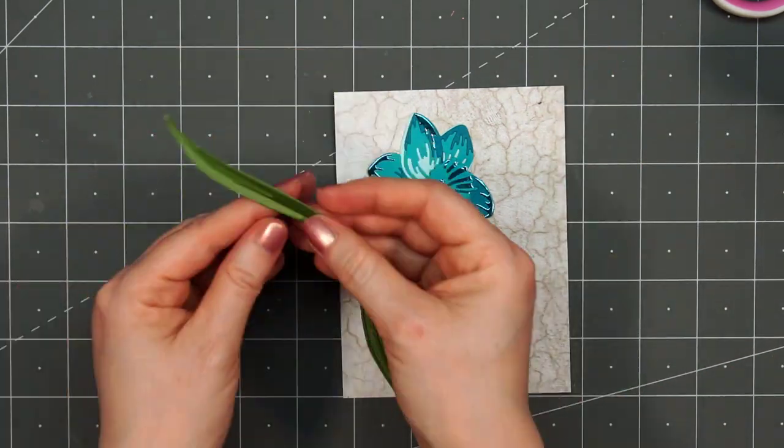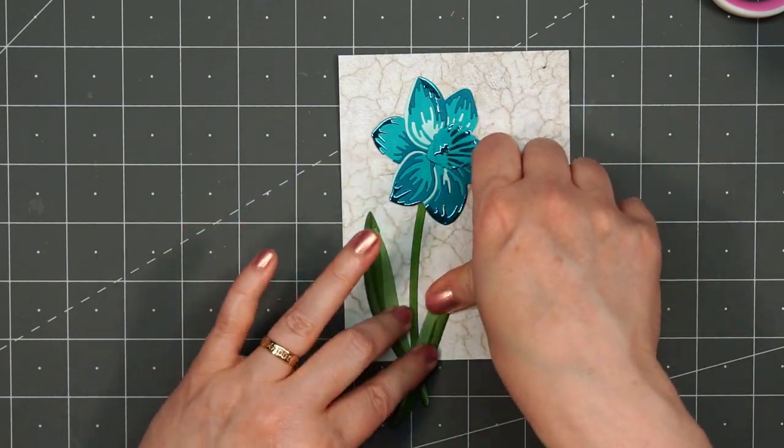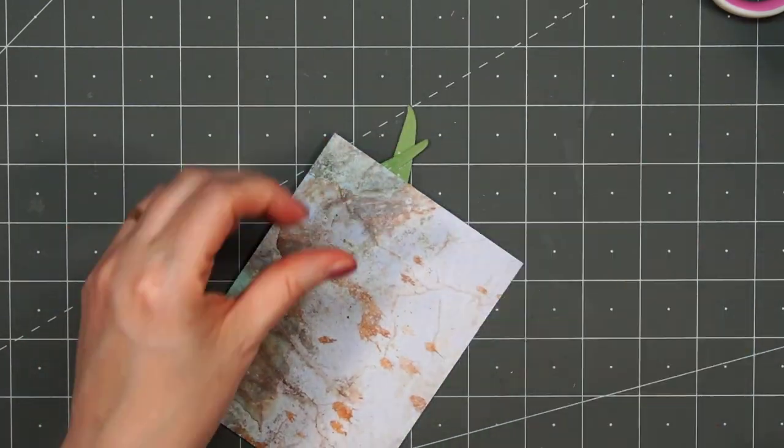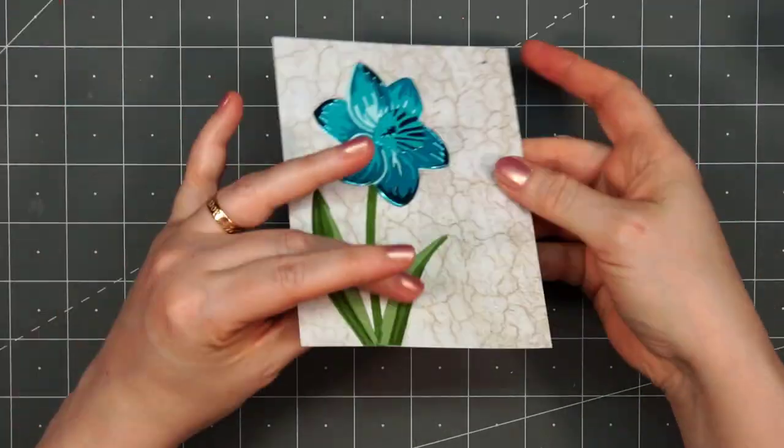I'll have two leaves, one on either side of the stem. Overall, a very simple design. Having that beautiful pattern paper makes it so I don't need to do a lot of extra work.